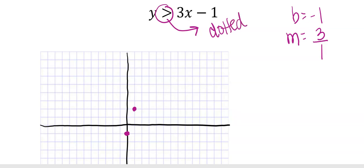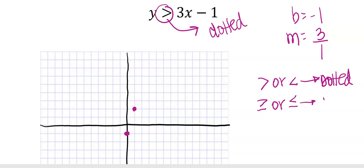Before I draw that in, the greater than means a dotted line. If it is a greater than or less than, it's dotted. If it's a greater than or equal to, or less than or equal to, your line is going to be solid. Dotted line points are not included; solid line points are included. We have to shade either to the right or to the left, or above it or below it.